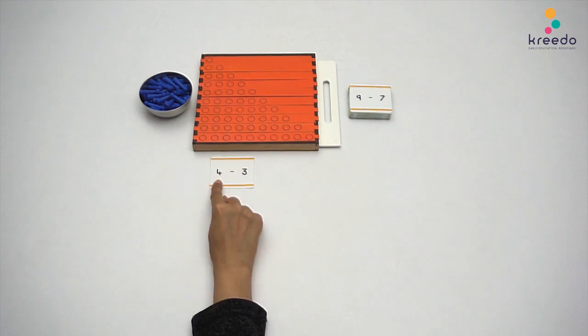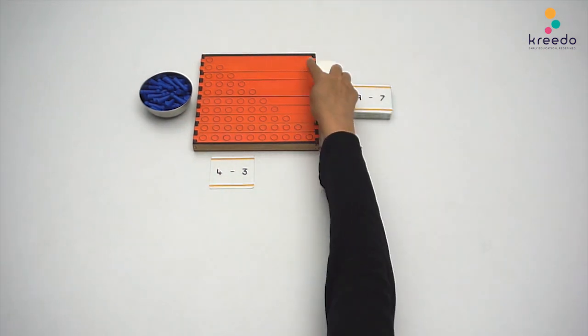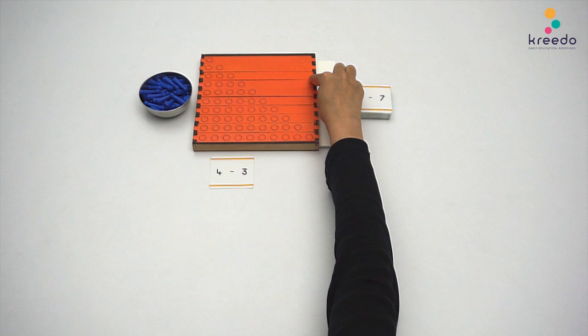Point and read the subtraction: 4 minus 3. Place the two strips, 4 and 3, in front of the child.